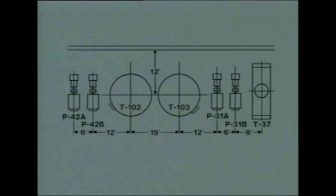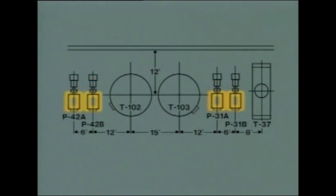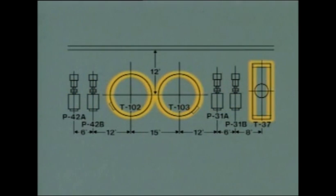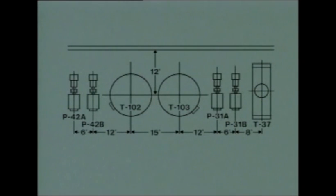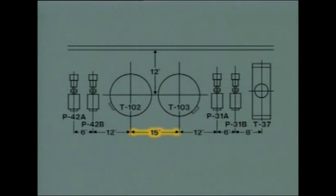An equipment arrangement diagram shows locations for pieces of equipment. Each type of equipment is represented by a symbol. For example, these symbols represent pumps, these represent motors, and these represent tanks. The symbols are similar in shape to the equipment they represent. Equipment shown on diagrams is usually labeled with its name or equipment number, or both. For example, a pump may be labeled P31A for pump number 31A. Some diagrams may also show the distances between equipment.